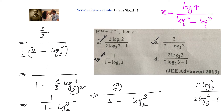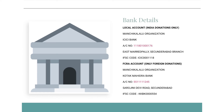So A, B, and C are correct. D is wrong because it has log 2 base 3 where it should be log 3 base 2, which is not correct. Therefore A, B, C are the correct options and D is not correct.